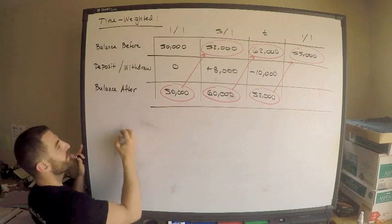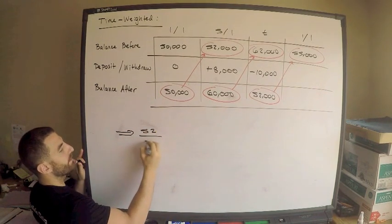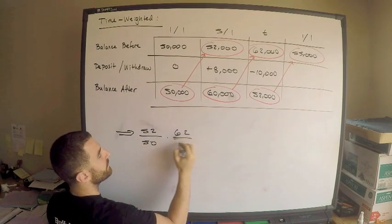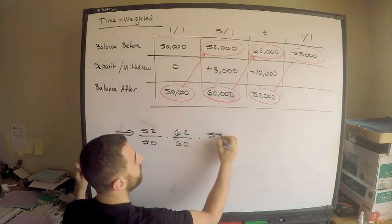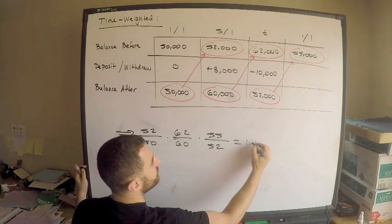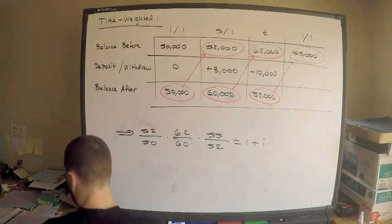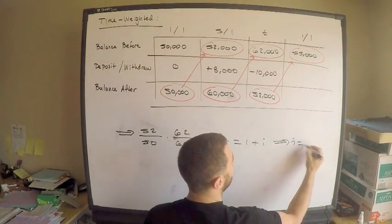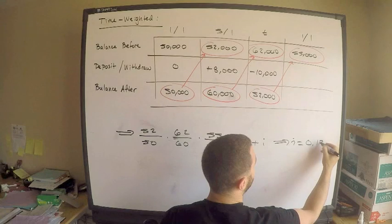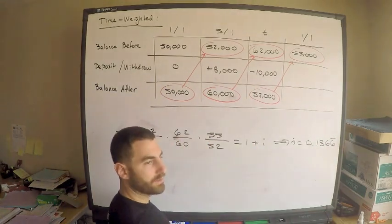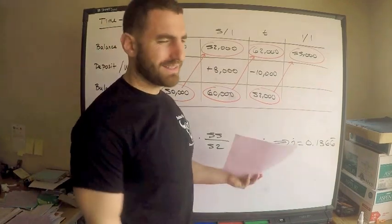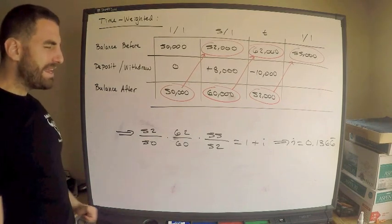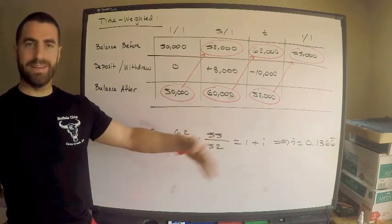52 divided by 50, times 62 divided by 60, times 55 divided by 52 equals 1 plus i. Work your magic. I is 13%, so this tells me i is 0.13 with a lot of sixes. I'll put a bar over that. I hate when they give ugly numbers like that. The time-weighted return gives me the interest rate.